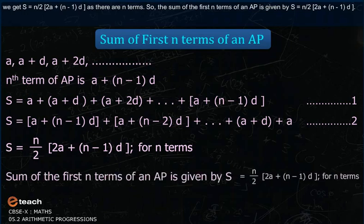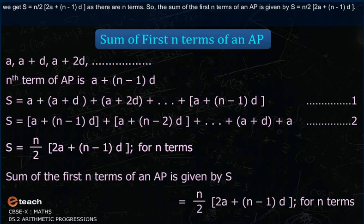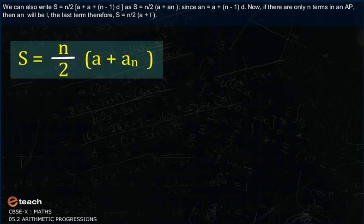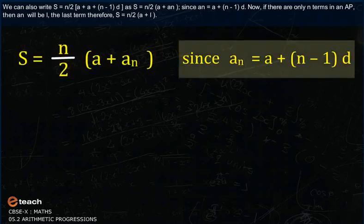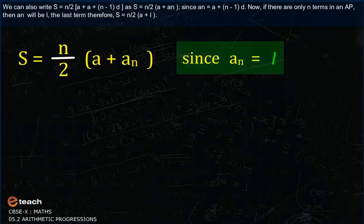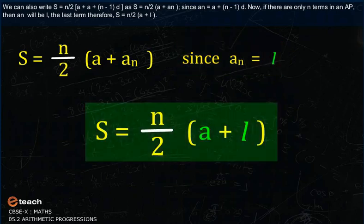Adding these two expressions term-wise, we get 2S = N × (2A + (N-1)D), since there are N terms. Therefore the sum of the first N terms is S = N/2 × (2A + (N-1)D). This can also be written as S = N/2 × (A + An), and since An = A + (N-1)D, if the AP has N terms and the last term is L, then S = N/2 × (A + L).